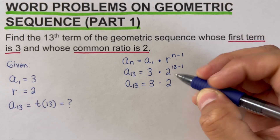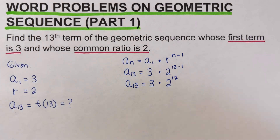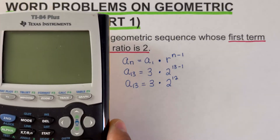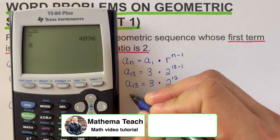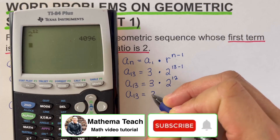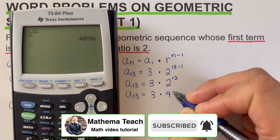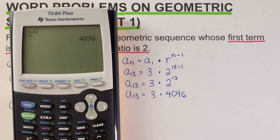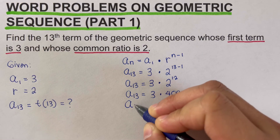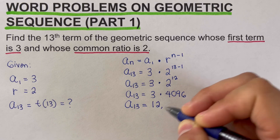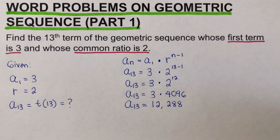Since 13 minus 1 equals 12, we rewrite this as a sub 13 equals 3 times 2 to the power 12. Using a calculator, 2 to the power 12 equals 4096. So a sub 13 equals 3 times 4096, which gives us 12,288. This is our 13th term.